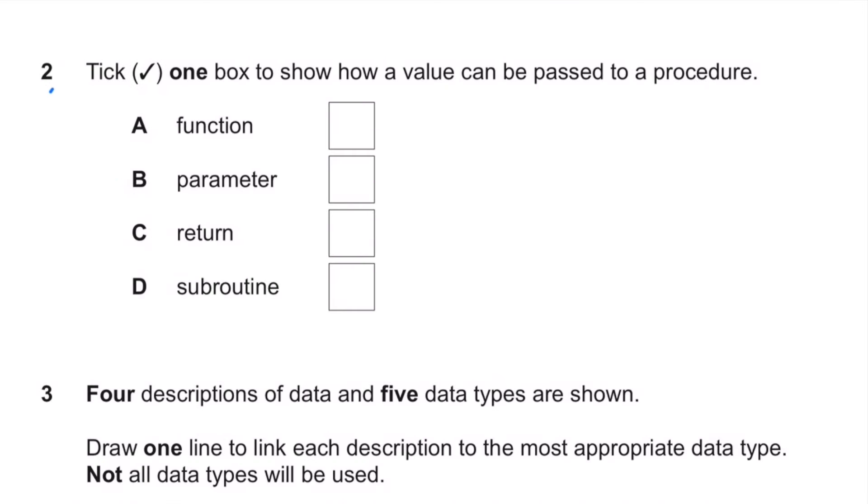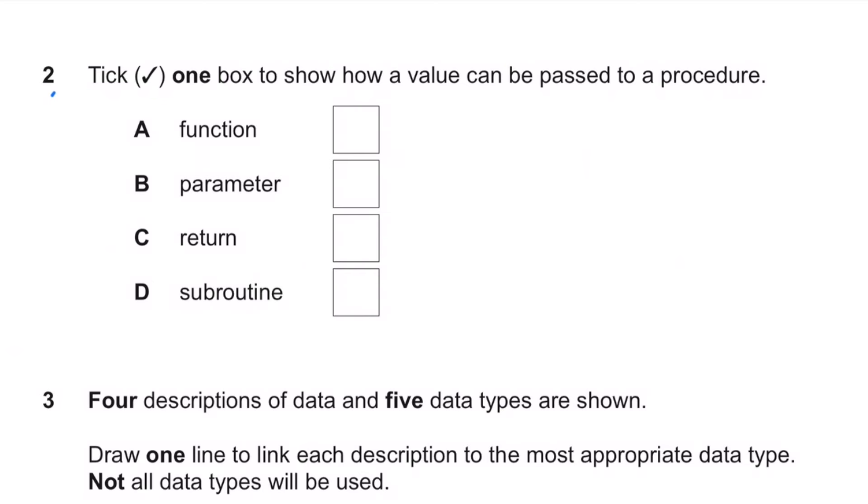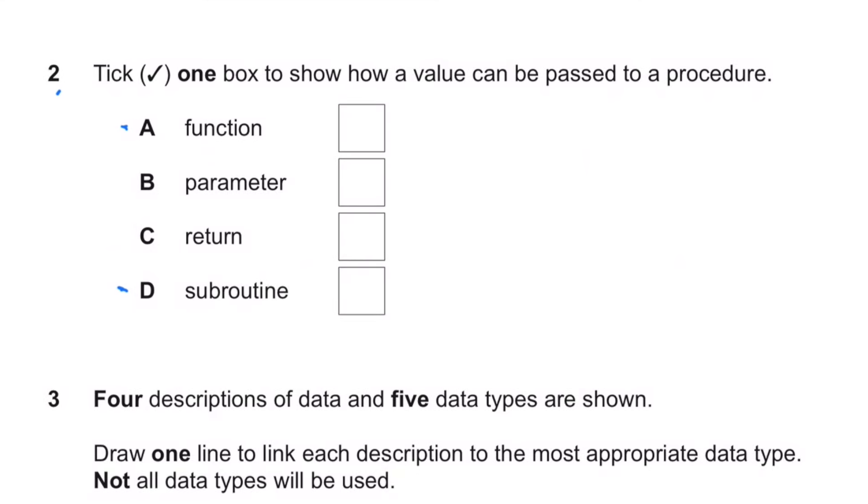Question 2: Tick one box to show how a value can be passed to a procedure. We've got function, parameter, return, and subroutine. Well, both a function and a subroutine are both procedures, so it leaves us with parameter or return. Return is not part of it at all, so it must be a parameter. In programming, passing a value to a procedure with a parameter involves providing a value to the parameter when calling the procedure.